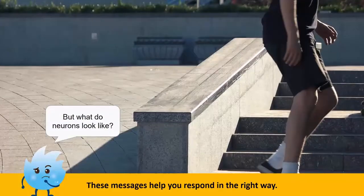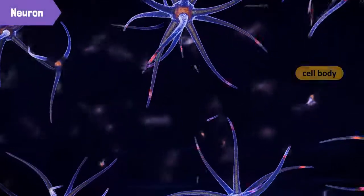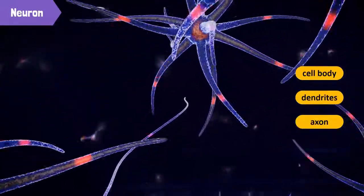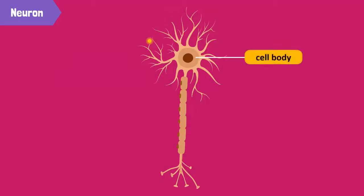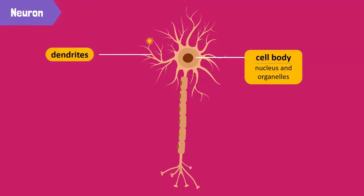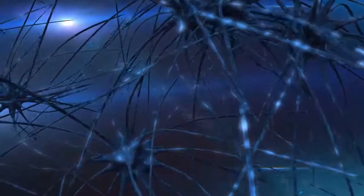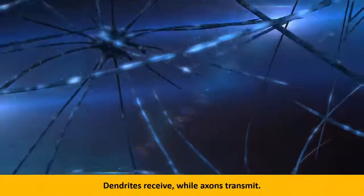But what do neurons look like? Neurons have three parts, called the cell body, dendrites, and axons. The cell body contains the nucleus and many organelles. It has long branches projecting from it, called dendrites. Dendrites pick up signals from their environment or other neurons. These signals travel from the dendrites to the axon. Then, from the end of the axon, messages are sent in the form of chemicals to the next cell or neuron. In other words, the dendrites and the axon act like telephone lines because they allow neurons to exchange messages with each other. Dendrites receive while axons transmit.